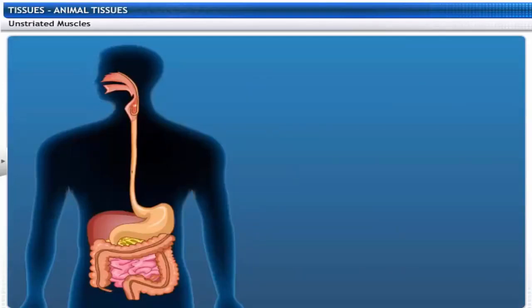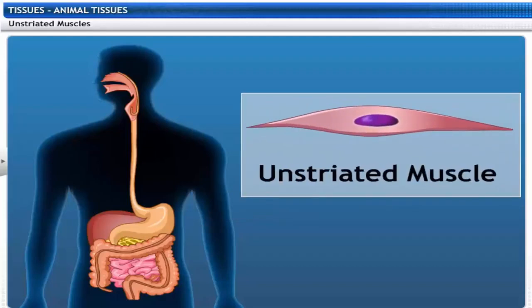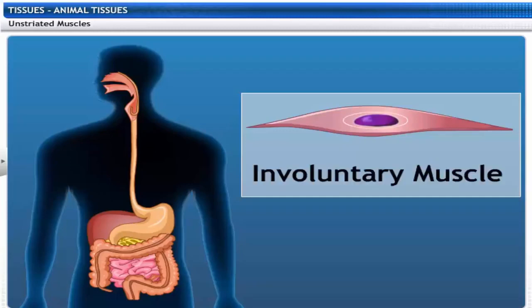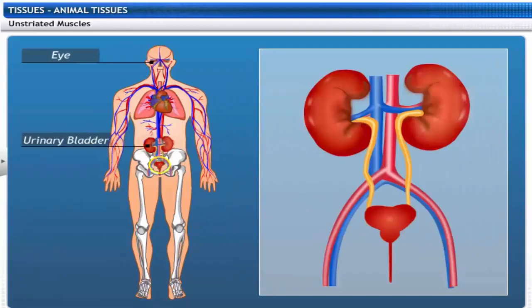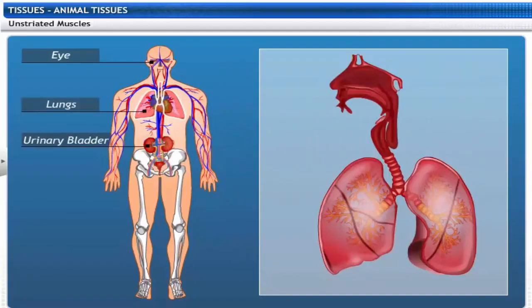See how the food is pushed down to the alimentary canal by the contraction and relaxation of muscles. This process is done by unstriated muscles which are spindle-shaped with one nucleus. They do not have striations and are called smooth muscles. They are also beyond our control and are called involuntary muscles. They are found in the iris of the eye, urinary bladder, and bronchi of the lungs.